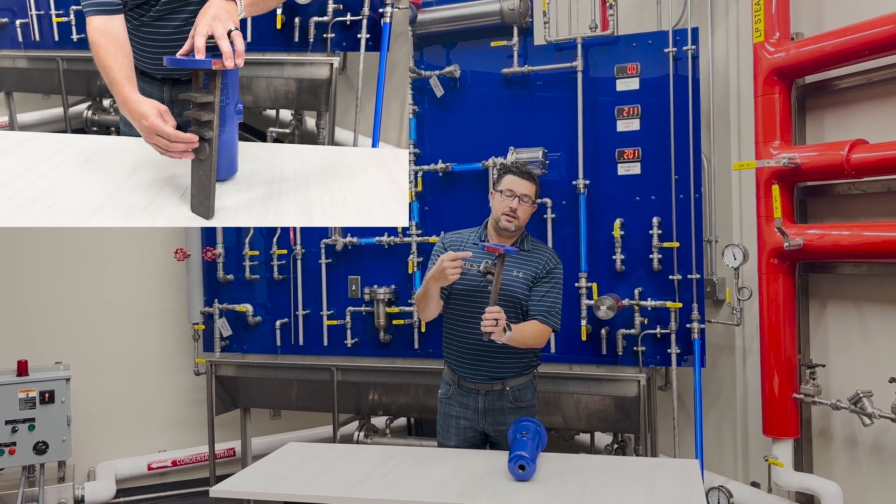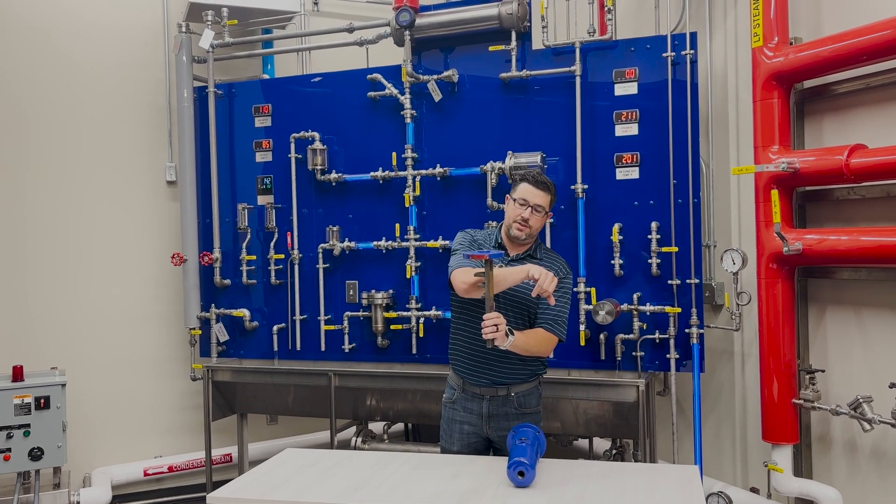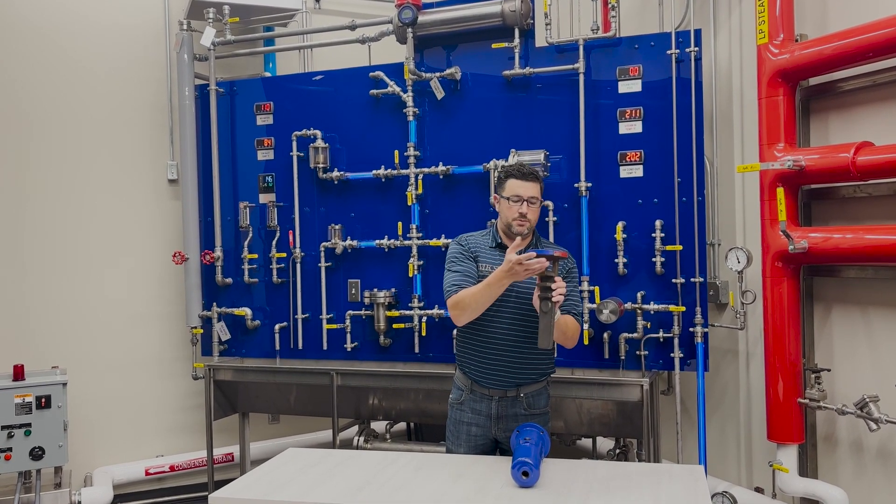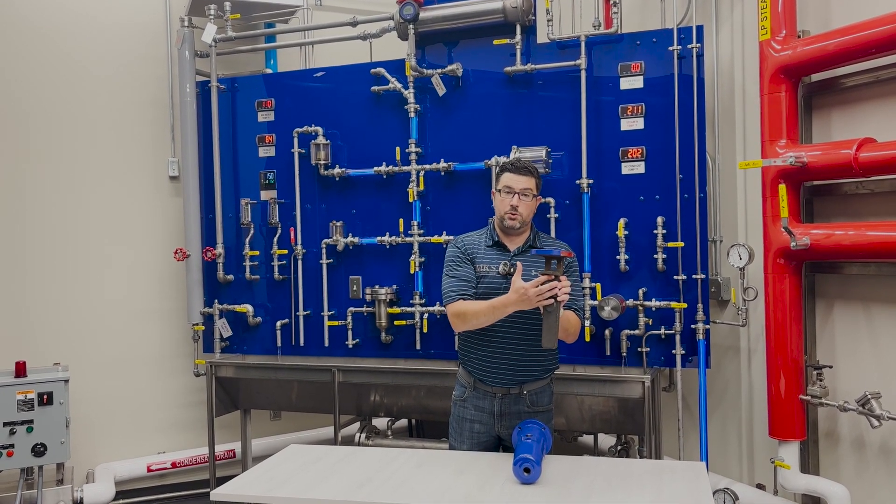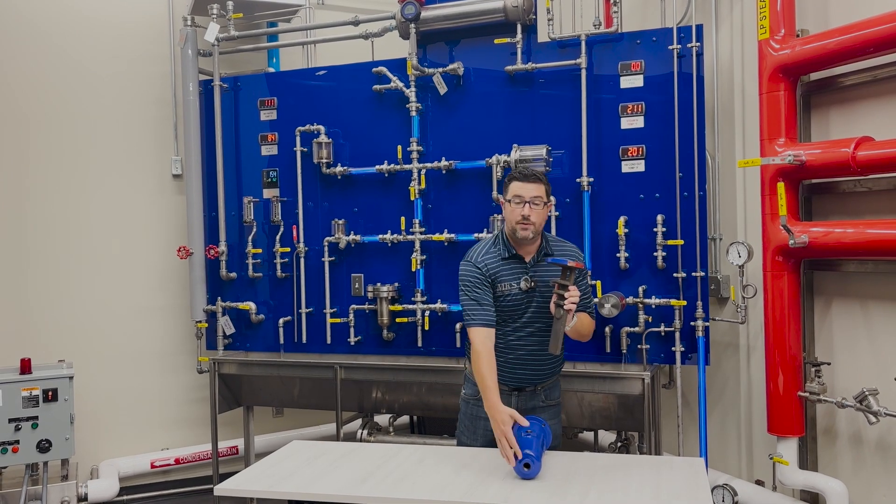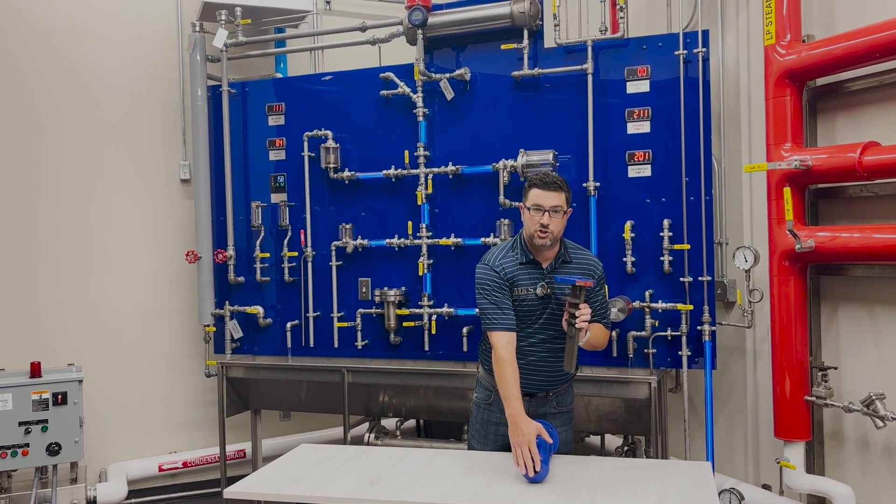So you've got clean, dry steam as a gas coming up and around the top. And all the entrained moisture is being forced by the baffles to flow down via gravity and come out the drain, which is piped out of the bottom of your separator.